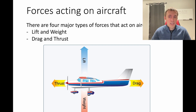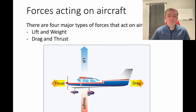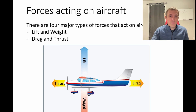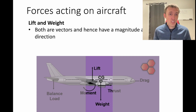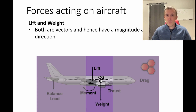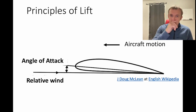Drag and thrust — thrust is of course moving the airplane forward, drag is resisting that movement, lift is allowing the plane to rise into the air, and weight is holding it down. For this first presentation, we're going to focus on lift and weight. Both are vectors, and both have a magnitude and a direction.